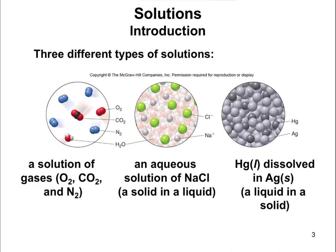There are different types of solutions. One type is a mixture of gases, which we discussed towards the end of last chapter. Another type, which we won't focus on much, is when you have a liquid dissolved in a solid. Usually, you dissolve a solid in a liquid, and that middle case — solid dissolved in liquid — is going to be our primary type of solution.